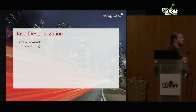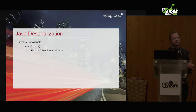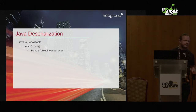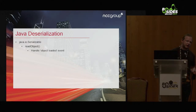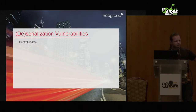If a class implements the Serializable interface, it can also implement a readObject method, which can be used in place of or in conjunction with Java's default method of reading objects. You can read custom data, have a version number in the stream for backward compatibility. We can also use that readObject method to handle the event that an object is loaded. For example, a class managing your database connection might write connection parameters using serialization, and when you read them back, it might automatically reconnect to the database.